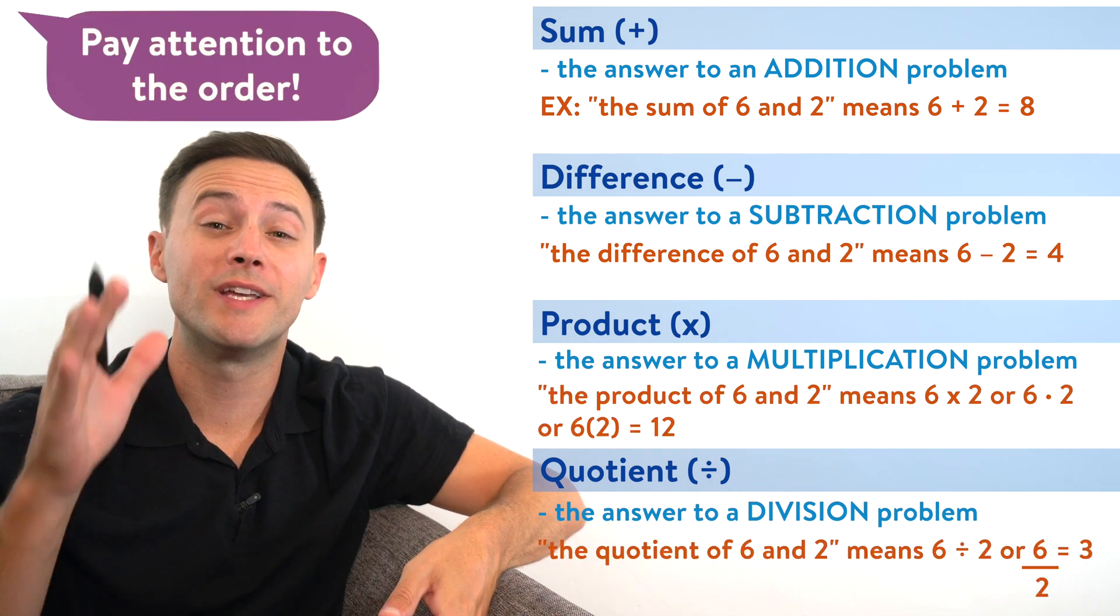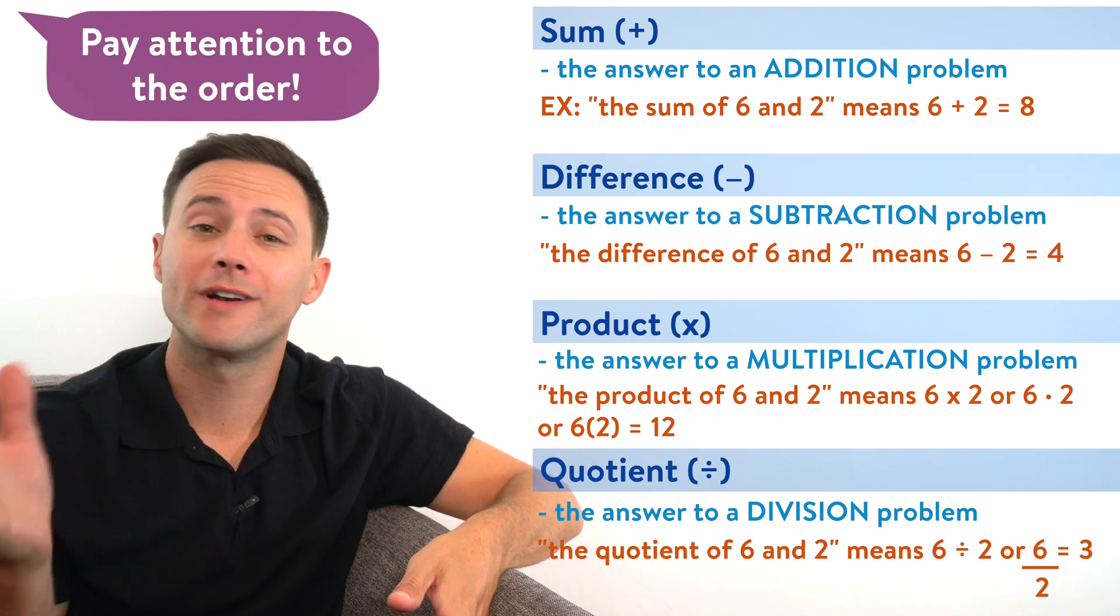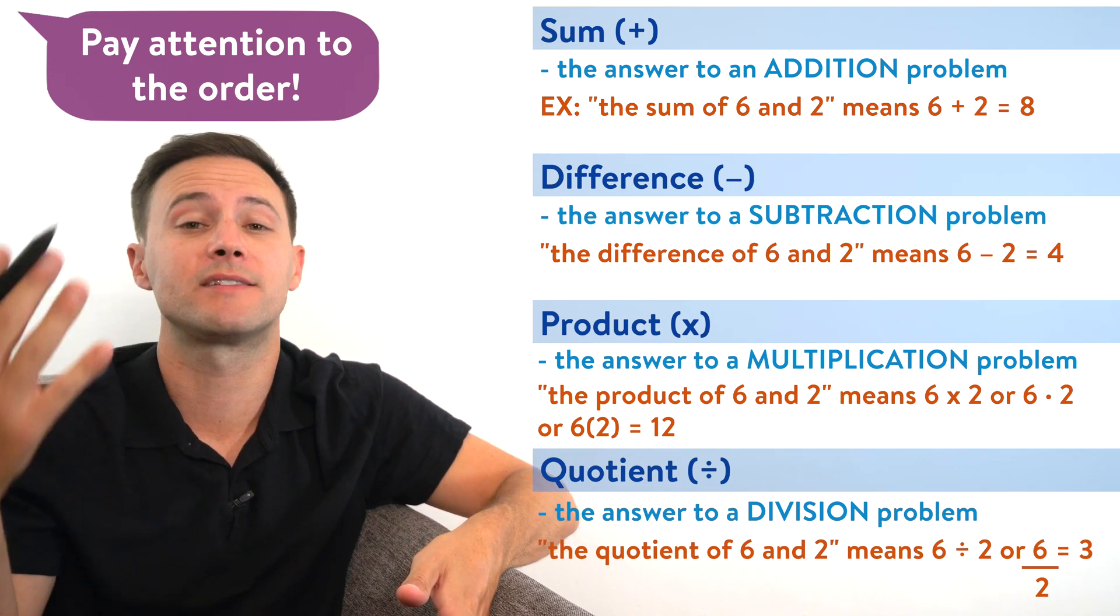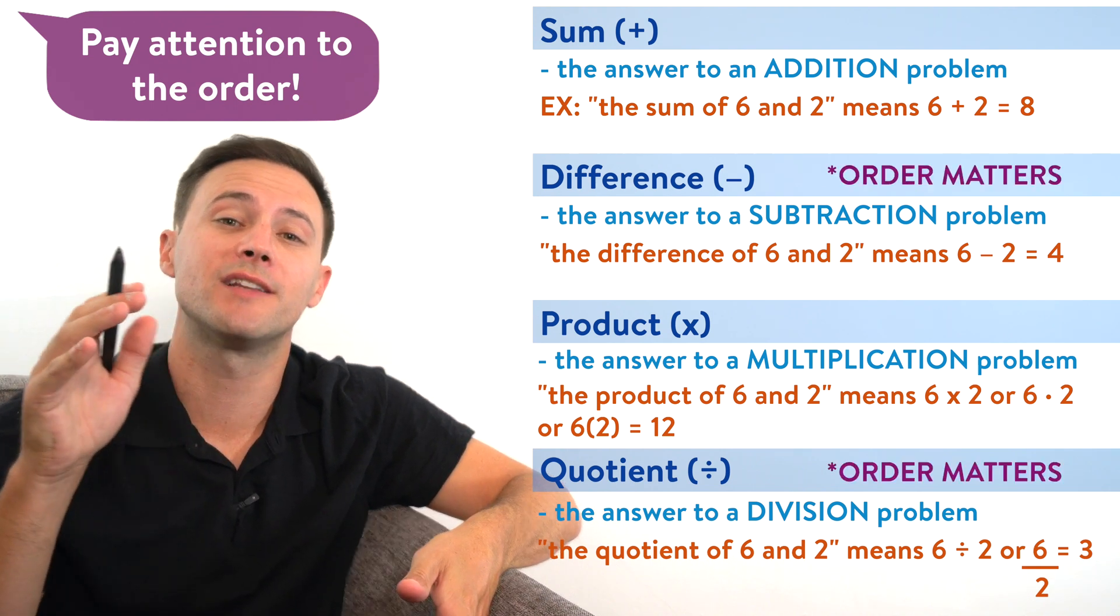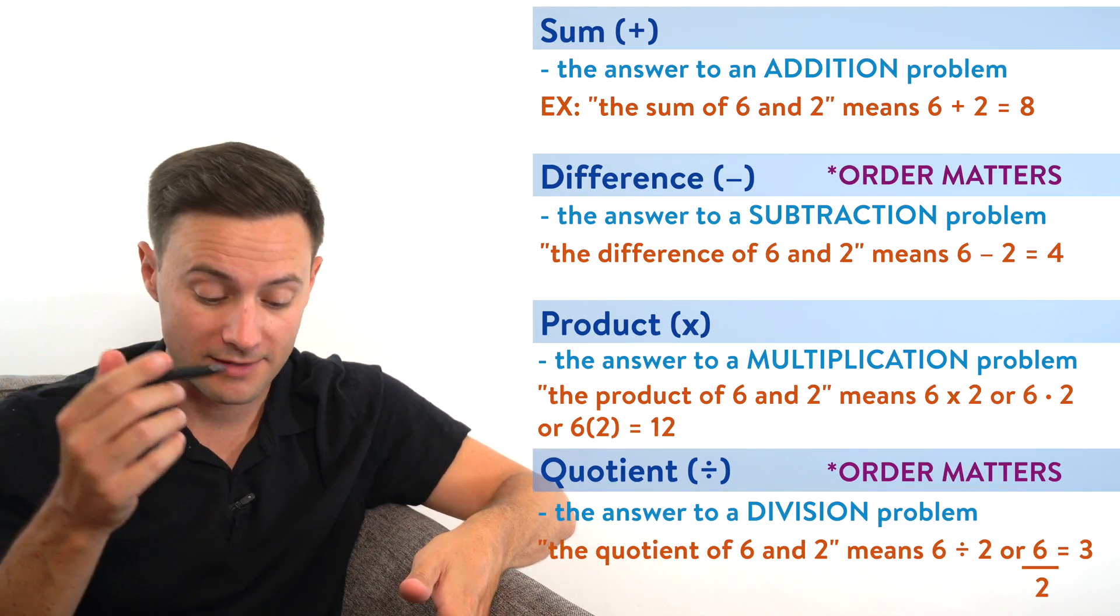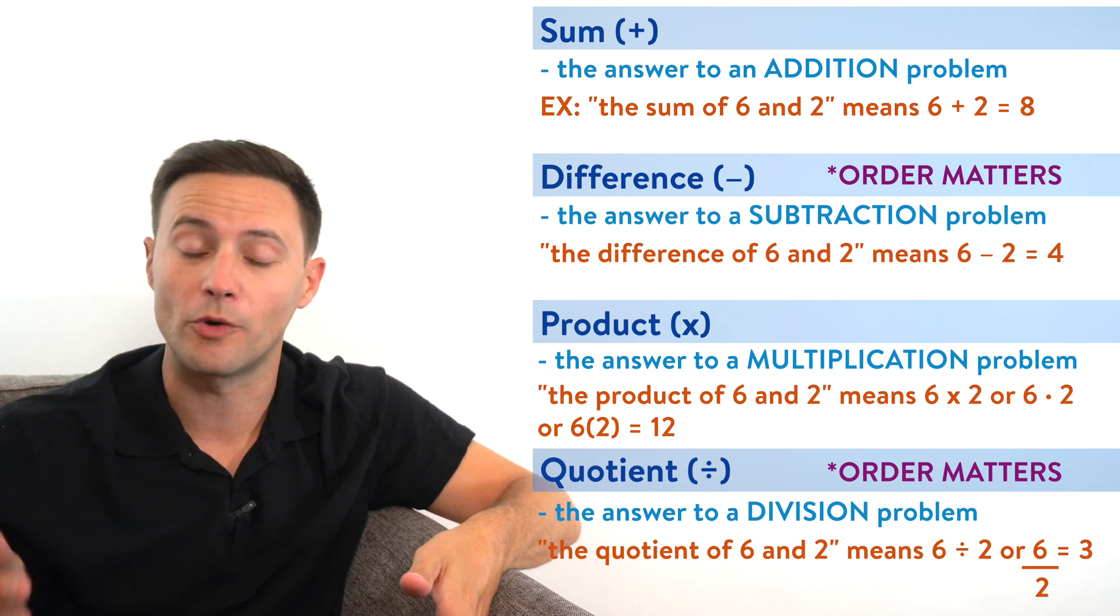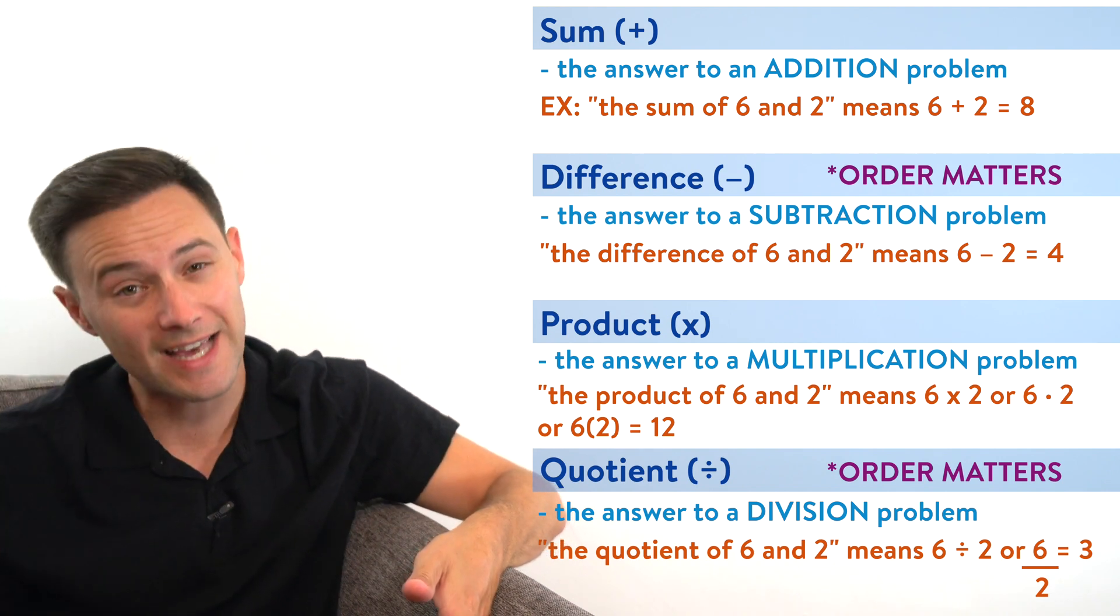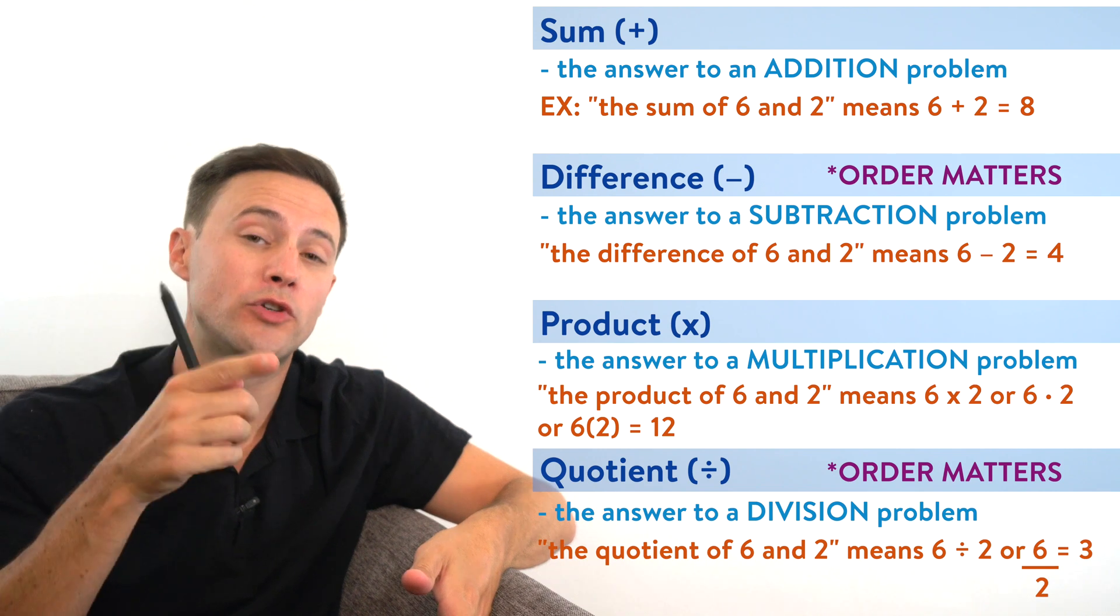A couple things to pay attention to is the order. With addition and multiplication, the order doesn't matter. Because if I do six plus two, or two plus six, the answer is still going to be eight. However, with subtraction and division, the order does matter. So if it says the difference of six and two, that means six minus two. However, if it said the difference of two and six, then we have to change the order. And that would mean two minus six.